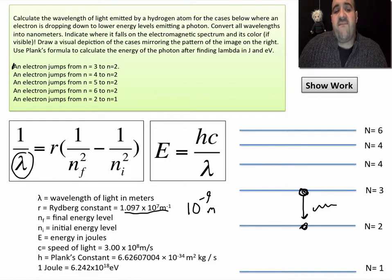n_f is the final energy level, and n_i is the initial energy level. We're starting from three, that's the initial energy level in this case, and we're dropping to two. So you really have one over two squared minus one over three squared multiplied by the Rydberg constant, and that equals one over lambda.